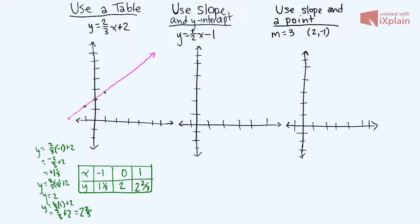And that is the graph for y equals two-thirds x plus 2. Now we do three points just to make sure that we didn't make a mistake on one. If we did, then we'd be able to see because it wouldn't be making a straight line.